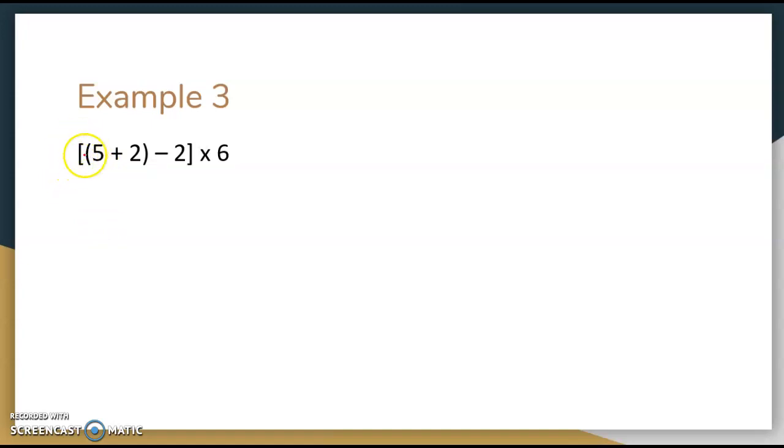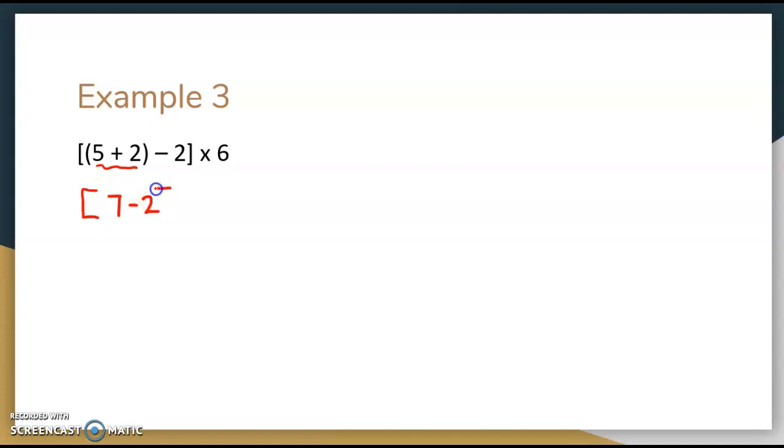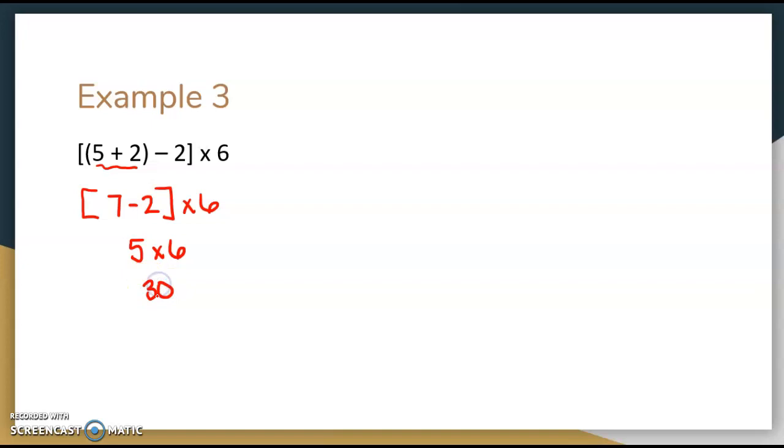One last example. We're going to start with our grouping symbols. As you see here, not only do I have parentheses but I also have brackets, so you're going to work from the inside out. Starting on the inside, I've got 5 plus 2, so that gives me 7. But I still have those brackets there, so that's what I do next: 7 minus 2 is 5. And then 5 times 6 is 30.